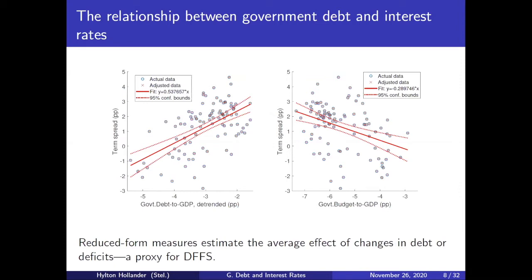Just to give an illustration: the literature highlights that the level of government debt to GDP has a very strong relationship with the term spread. With rising government debt to GDP, the term spread widens. On the right-hand panel, that's the budget balance — it'll be more downward sloping. This measure estimates the average effect of changes in debt or deficits as a proxy for debt-financed fiscal stimulus.